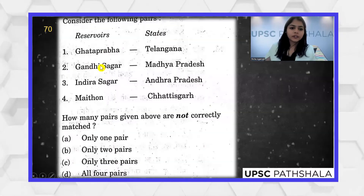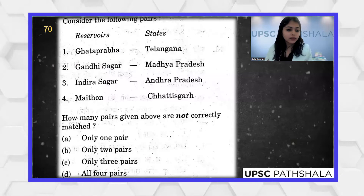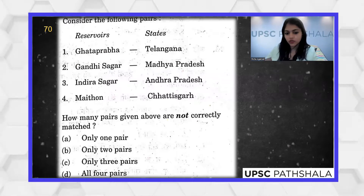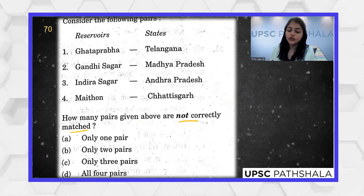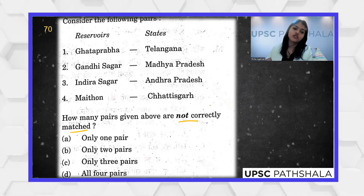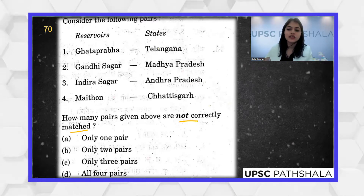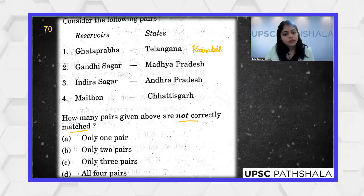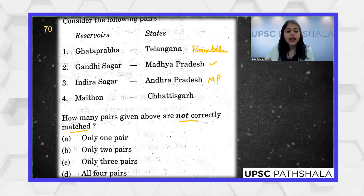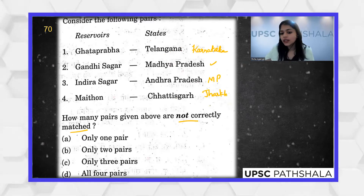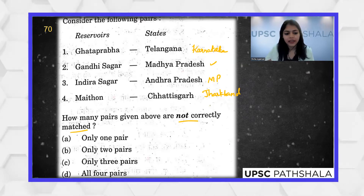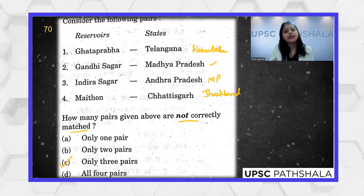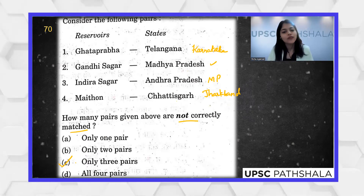Moving ahead: Ghat Prabha in the state of Telangana, Gandhi Sagar in MP, Indra Sagar — they're asking the number of incorrectly matched pairs. Such questions cannot be answered by the technique of elimination; you have to know with certainty the correct state for each reservoir. Ghat Prabha is in Karnataka, Gandhi Sagar is in MP, Indra Sagar is also in MP, and Maithon is in Dhanbad in Jharkhand. Three pairs are incorrectly matched, so the answer is C.